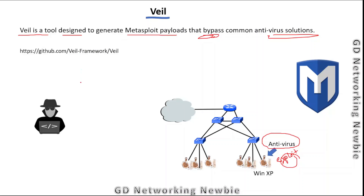In this lab activity, I will have a Kali Linux machine. We will install the Veil framework, then generate a payload. I will share that payload on Google Drive and send a link to the victim. Using a social engineering technique I'll convince the user to download that file from Google Drive. When the victim tries to open it, they will give us a reverse shell back to our Kali Linux machine.